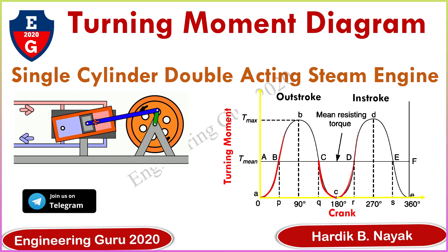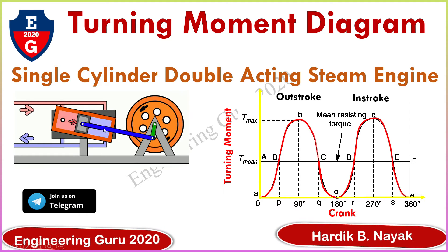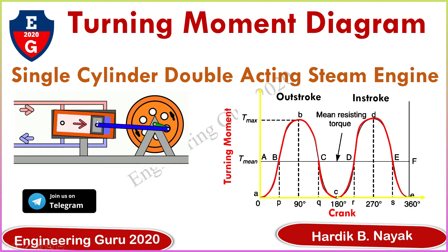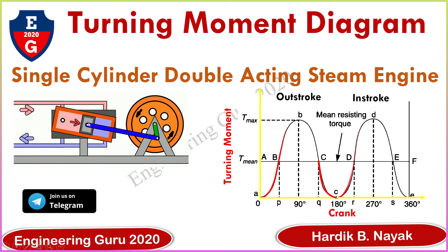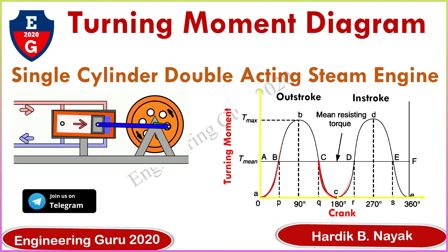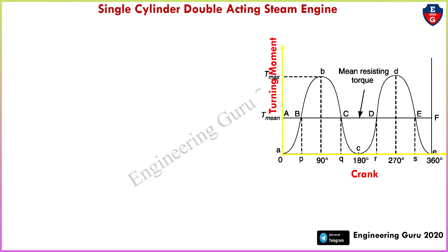In a single cylinder, the piston is single — meaning one — and the working fluid acts alternately on both sides, meaning from the forward direction and the backward direction. Let's see the turning moment diagram for a single cylinder double acting steam engine. Here this is the schematic diagram of the single cylinder double acting steam engine.